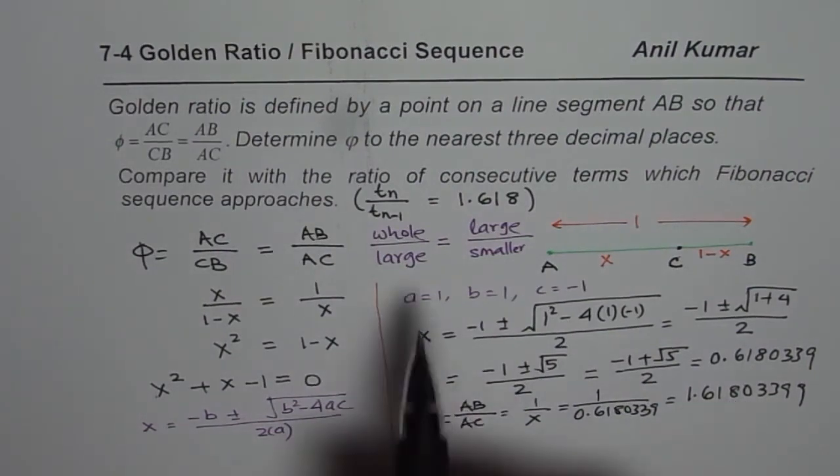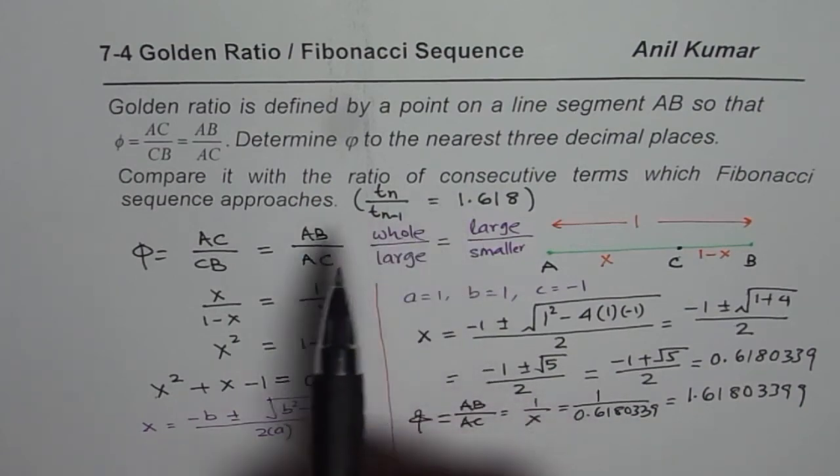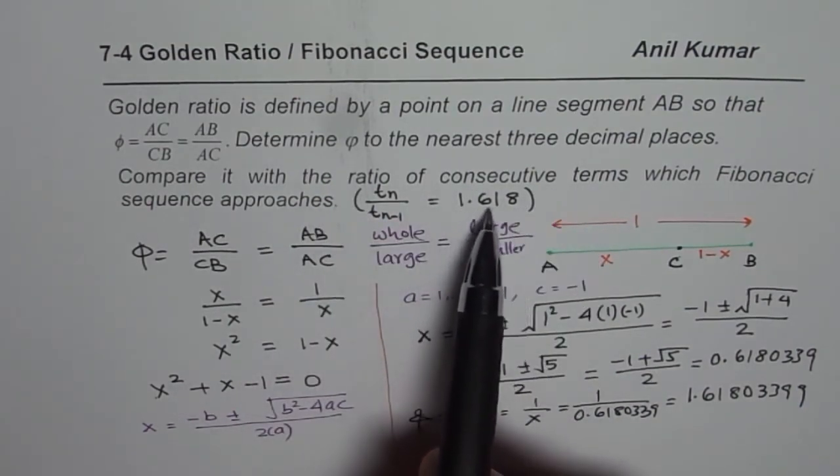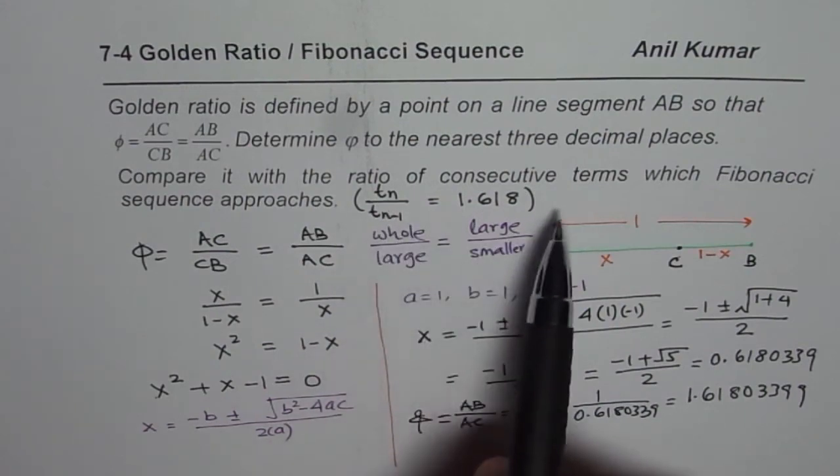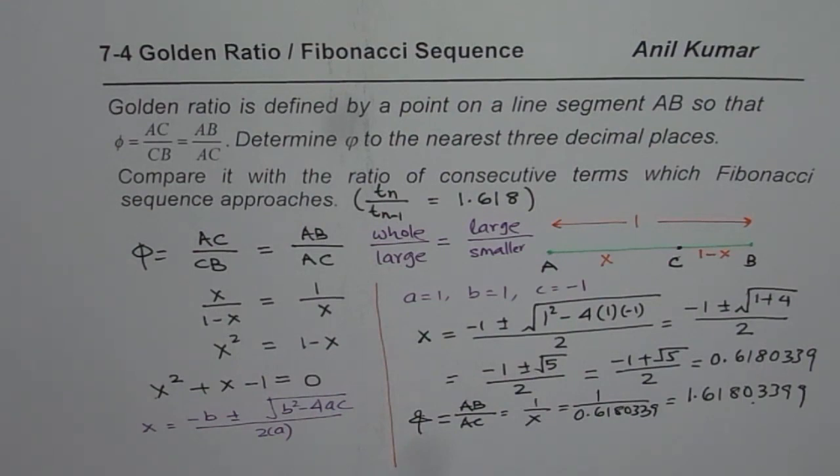Now, what did we find? We found that the ratio of consecutive terms is 1.6180. If you extend this, you will approach this value of golden ratio. That is how these two things are so well connected. I hope with this, you can appreciate the application.